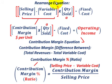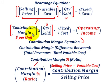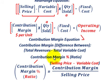Operating income also equals contribution margin times quantity sold minus fixed costs. The contribution margin is the difference between total revenues and total variable costs. Total revenues equal selling price × quantity, and total variable costs equal variable cost per unit × quantity — giving us the same operating income result.